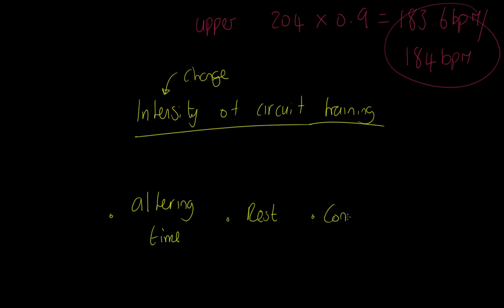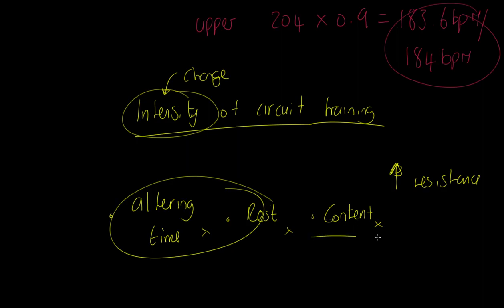And then we can change the intensity by changing the content. I actually, on an individual lesson, disagree with all of these. This is not a change in intensity. I believe is one way to change the intensity of circuit training, and that is to increase resistance. Because these two are about time and this one's about type. This one here, the resistance, is ultimately about intensity.